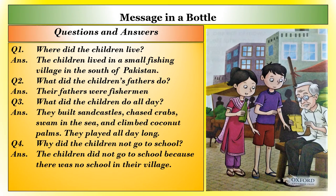Questions and answers. Question 1: Where did the children live? Answer: The children lived in a small fishing village in the south of Pakistan. Question 2: What did the children's fathers do? Answer: Their fathers were fishermen. Question 3: What did the children do all day? Answer: They built sand castles, chased crabs, swam in the sea and climbed coconut palms. They played all day long. Question 4: Why did the children not go to school? Answer: The children did not go to school because there was no school in their village.